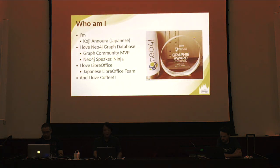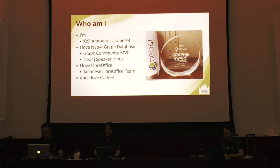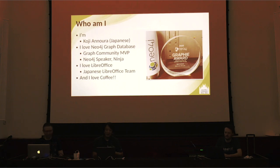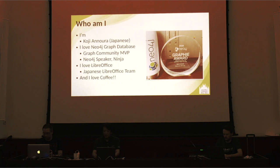Who am I? I'm Koji Anora from Japan. I'm the Neo4j Graph Database speaker, and Neo4j Ninja. I'm the Neo4j Japanese Neo4j skin and coffee. Given the Graph Database, please raise your hand.